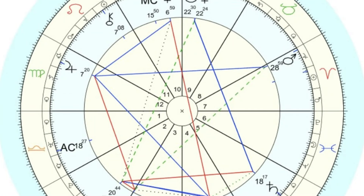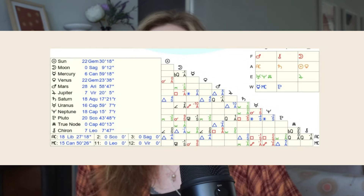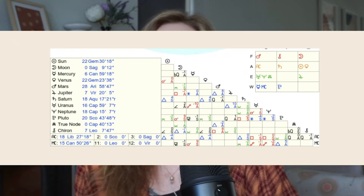Notice the green, red, and blue lines in the center of your chart — these lines show the aspects, focusing on major aspects and the inconjunction. The red lines show oppositions and squares, the blue lines show trines and sextiles, and the dashed green lines show inconjunctions. You can find the aspects beneath the chart using astro.com, and these lines in the center of your chart can help you identify the pattern.